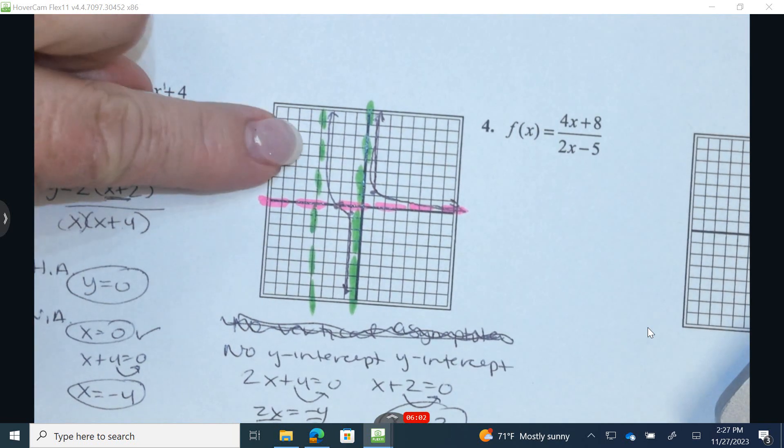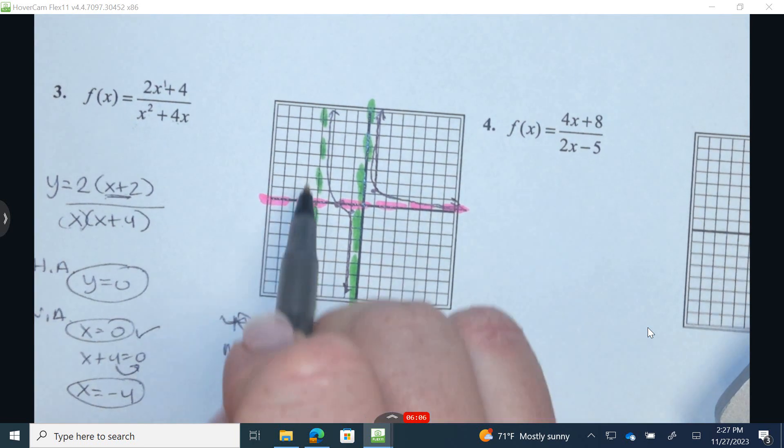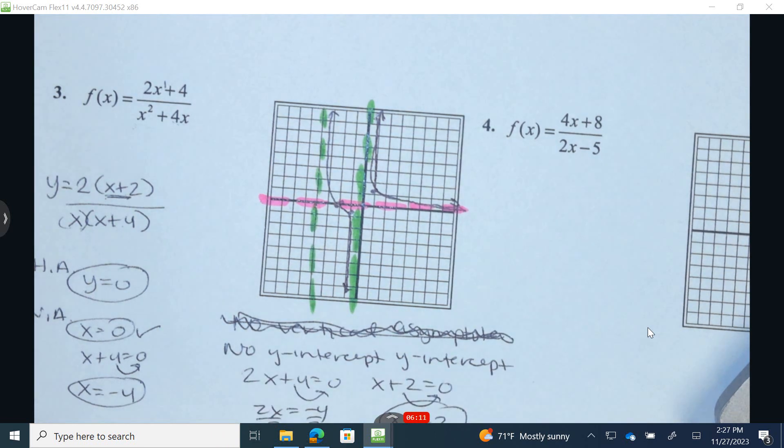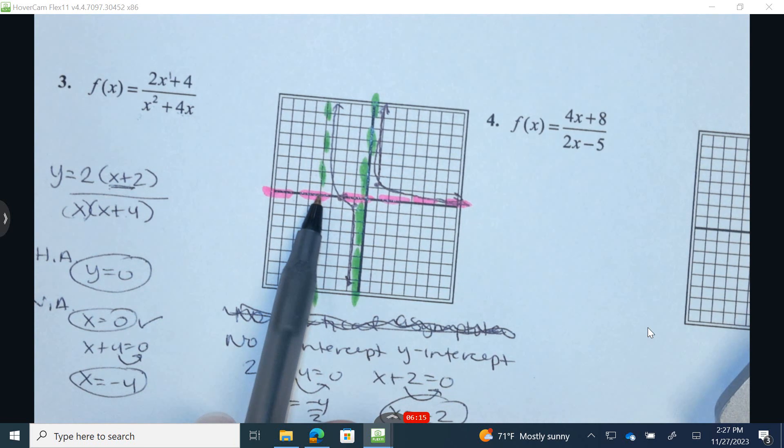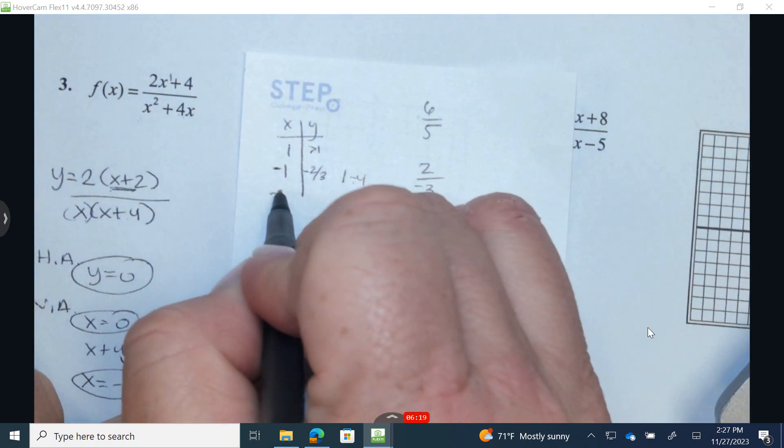Now I need to know, is it going to be above or below the x-axis? So I'm going to choose a number. 1, 2, 3, 4, 5. The first, I'm going to choose the first integer to the left of the vertical asymptote. So x equals negative 4. So I'm going to choose negative 5. Bringing this back up, I'm going to choose negative 5.